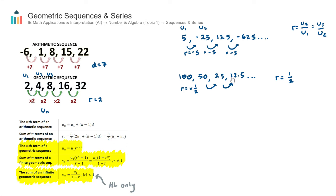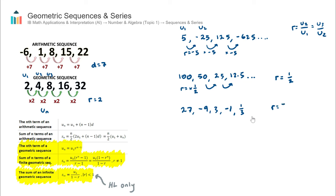One more example: 27, negative 9, 3, negative 1, and then one third. This is a combination of the previous two — the values switch between positive and negative, and the sequence is also decreasing. Working through it, the common ratio is negative one third. You can verify this: the second term divided by the first term gives negative 9 over 27, which equals negative one third.